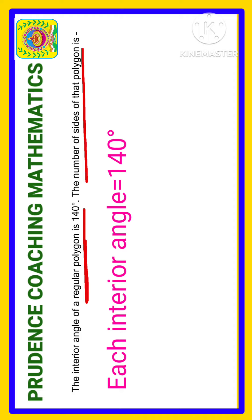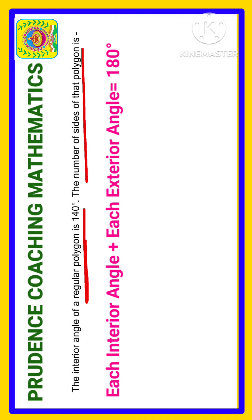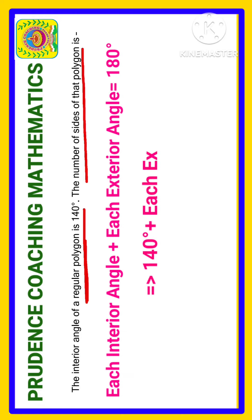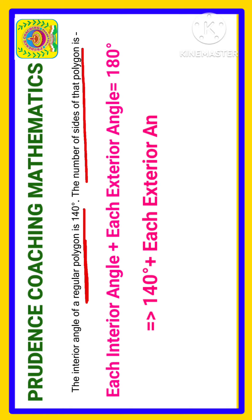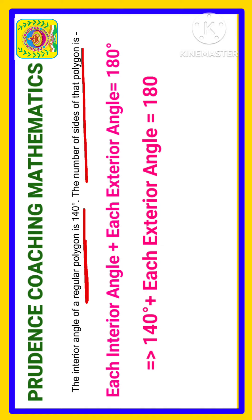We know that if we add each interior angle and each exterior angle of a regular polygon, we get 180 degrees. Here the interior angle is given as 140 degrees, so we can write: 140 degrees plus each exterior angle equals 180 degrees.